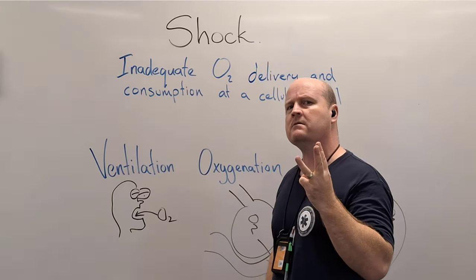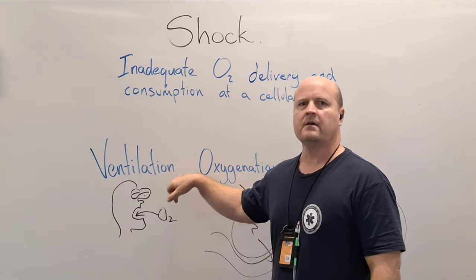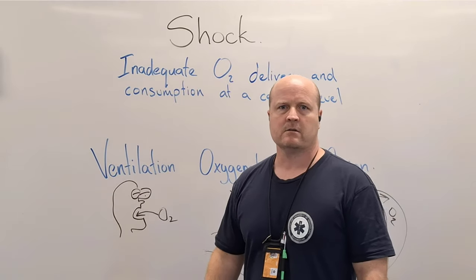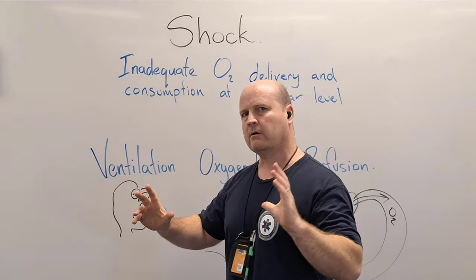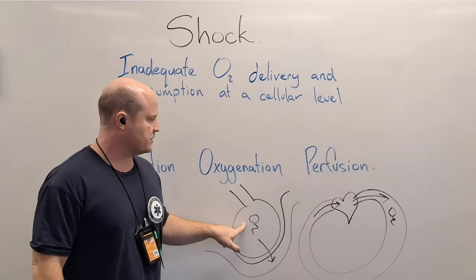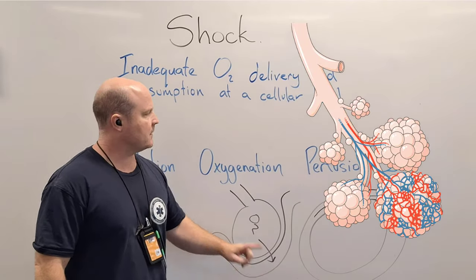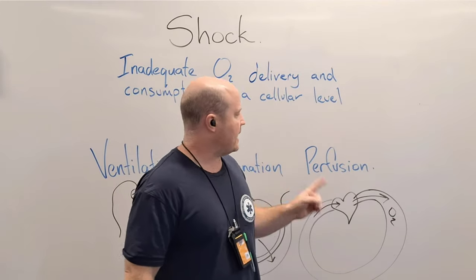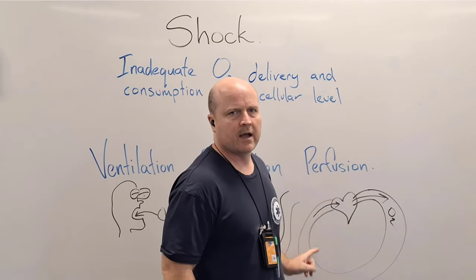We need three things to avoid shock. We need adequate ventilation — the movement of air in and out of our lungs, just like you ventilate a house by opening a door or window. We also need oxygenation, where oxygen moves out of our alveoli and into our bloodstream. And finally we need perfusion, or blood flow — adequate circulating blood to carry oxygen around our body.